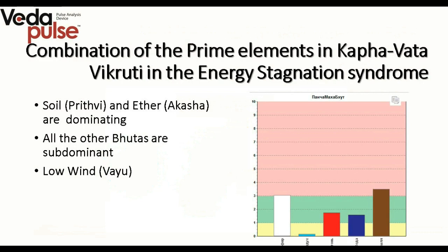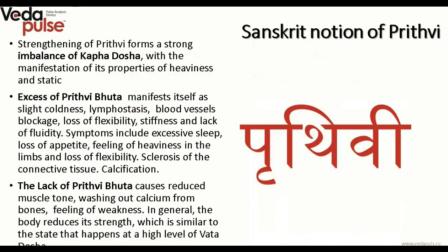If you use the Nidana module of the Veda Pulse program in the Pancha Mahabhuta tab, you could see this combination manifesting differently depending on various tendencies. In its classical form, it goes with a tendency to increase of Prithvi (soil) and Akasha (ether). Other elements would be subdominant. Wind, as a rule, in most cases would be lowered. The majority of problems are connected with two elements: Prithvi and Akasha.